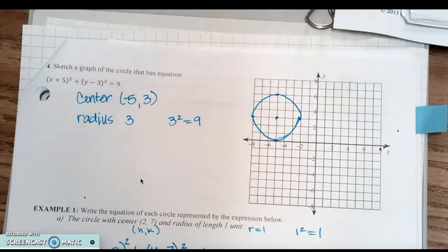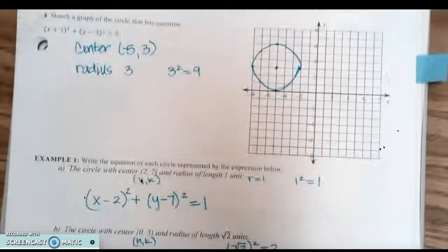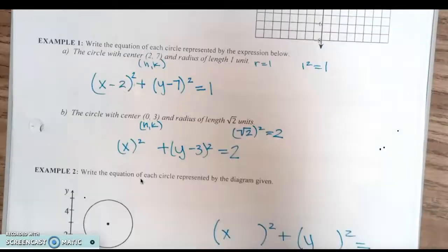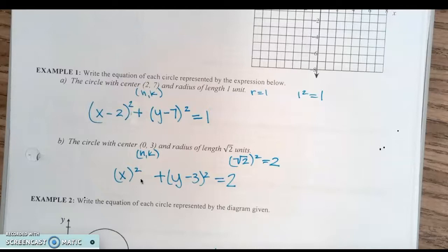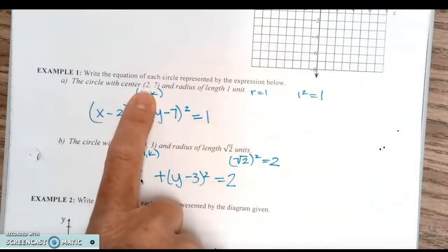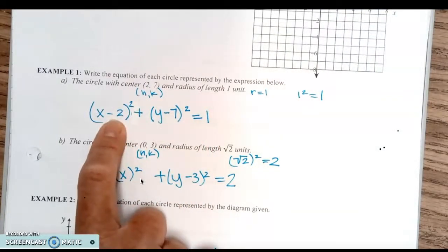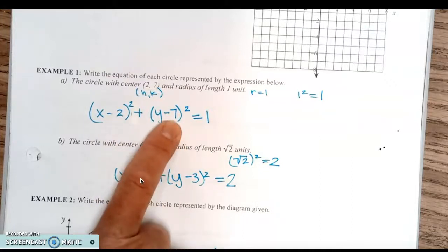Now we'll try a couple that are a little different. Example 1: write the equation of each circle. Part A — the circle with center (2, 7) and radius of 1 unit. One squared is 1, and the square root of 1 is 1 — a little awkward, but you plug in 1 on the right side, take the opposite of 2 for x: (x - 2), and the opposite of 7 for y: (y - 7). The equation is (x - 2)² + (y - 7)² = 1.